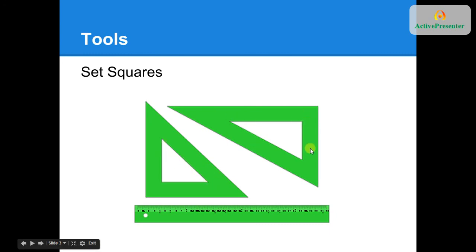This set square over here, a 30-60 degree set square, we're going to use for our isometric drawings. A ruler, you'll generally need those just to measure the length of different lines, although most set squares have on each side a ruler.